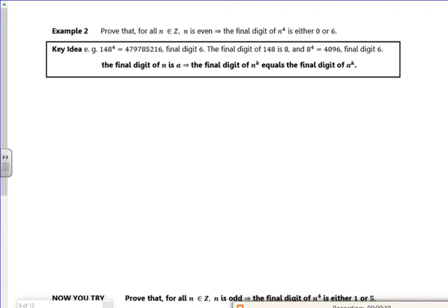Right, so we've got here to prove that for all n, if n is even, the final digit of n to the four is either zero or six.